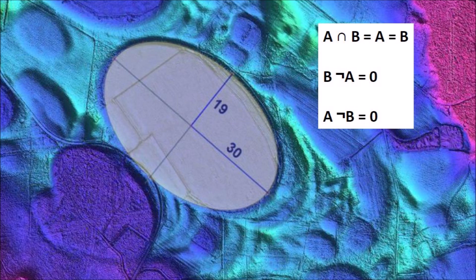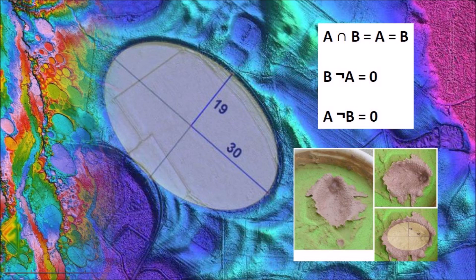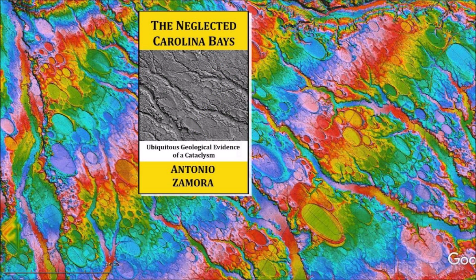Do not let anybody tell you that the Carolina Bays are thaw lakes or thermokarst. The geometry of the Carolina Bays should not be ignored — it tells us precisely that these geological features are impact structures. They are the scars of a catastrophe that triggered the extinction of the megafauna and the Clovis culture 12,900 years ago. Thank you for joining me in the investigation of the Carolina Bays and the Younger Dryas Cataclysm. I will continue to examine the Carolina Bays one bay at a time.